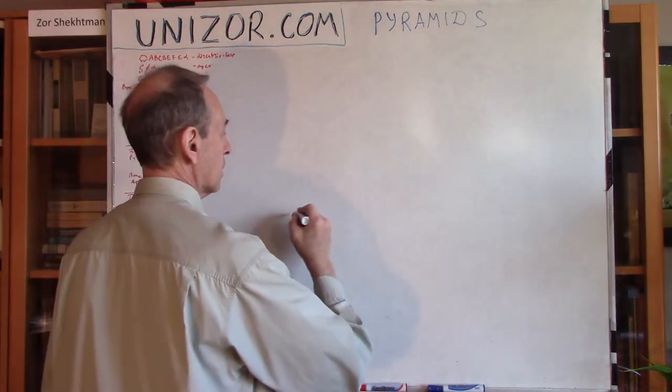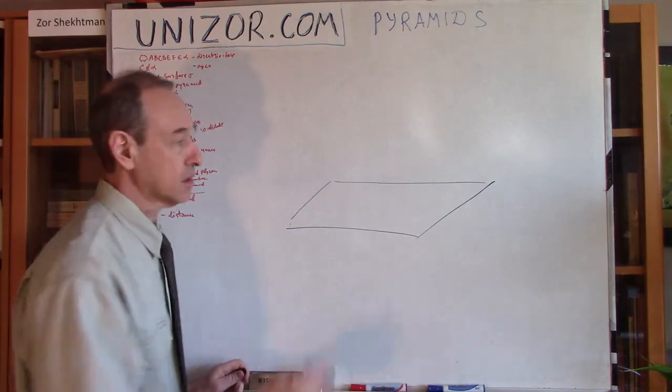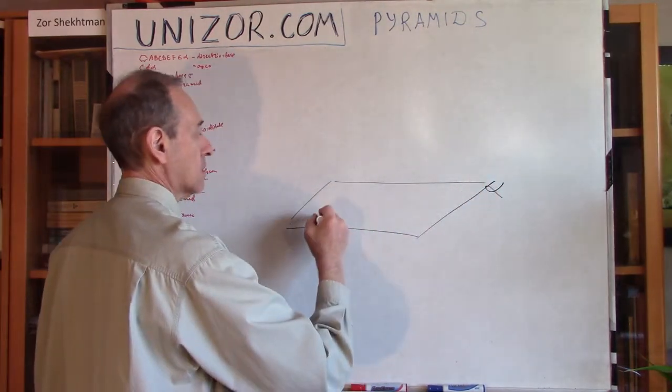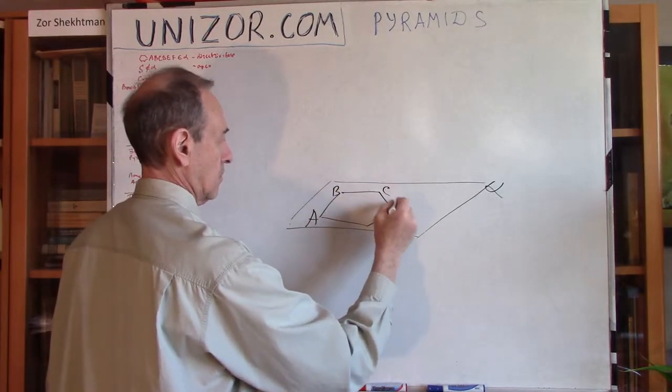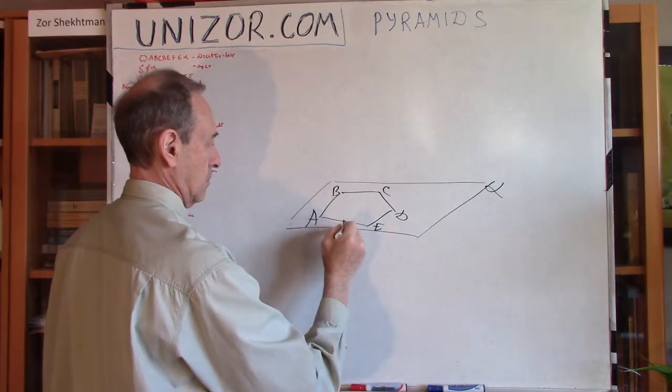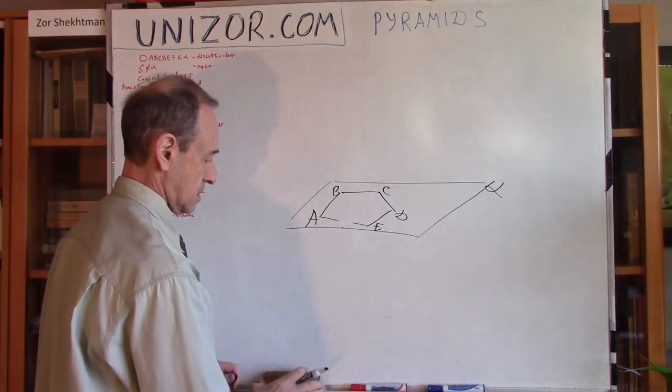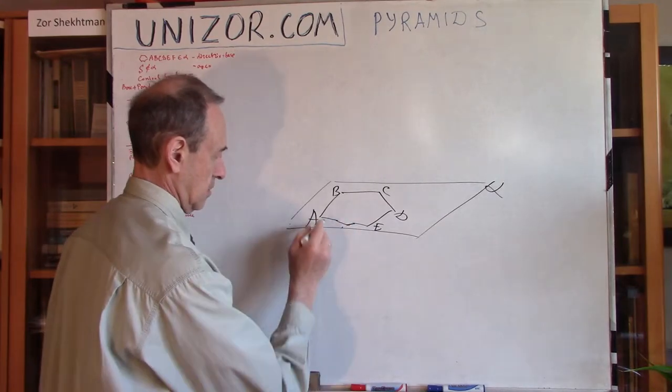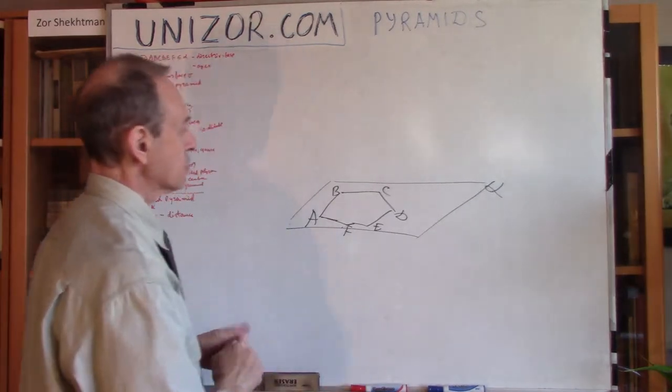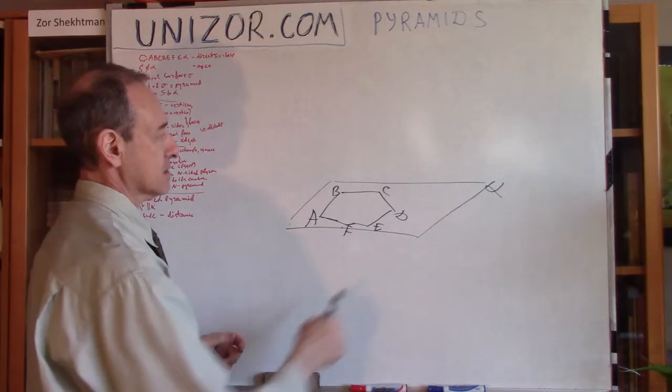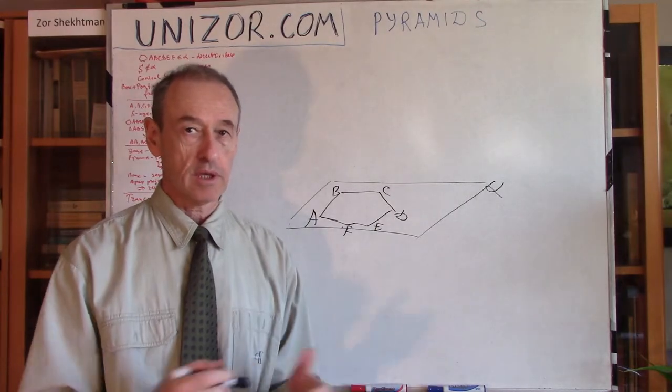So, assume that our directrix, the curve, which is in the base of the pyramid, is some kind of a polygon on a plane. So, there is a plane, and there is a polygon on this plane. Well, in this case, I was trying to put some kind of hexagonal. It doesn't really matter what kind of a polygon. So, let's imagine that we have a polygon on some plane, alpha, and this polygon will be used as a directrix of the conical surface.